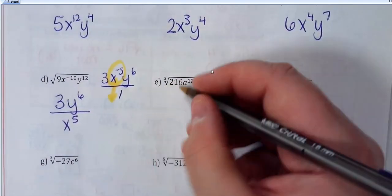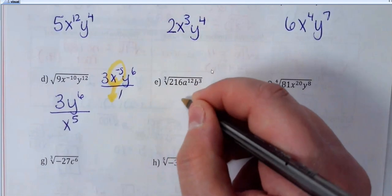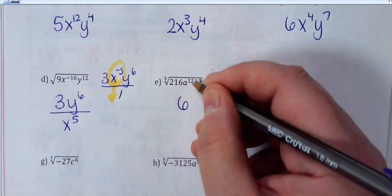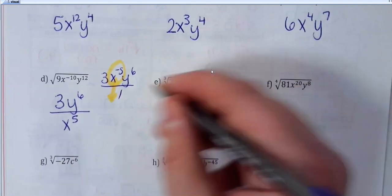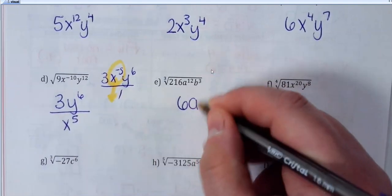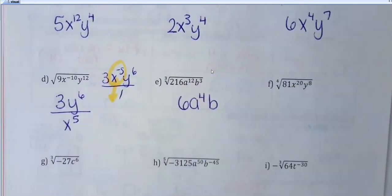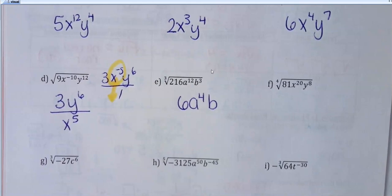216 — the cube root is 6. For the exponents with a cube root, we divide by 3. So 12 divided by 3 gives a to the 4th. And 3 divided by 3 would be 1 — a cube root and a cube cancel each other out. Typically an answer key won't write an exponent of 1 there, so it would just be written as b.